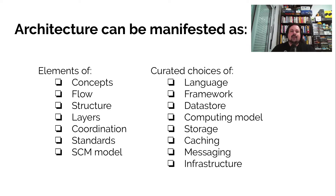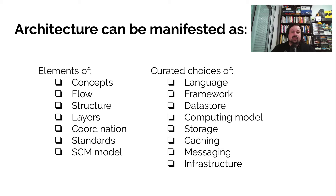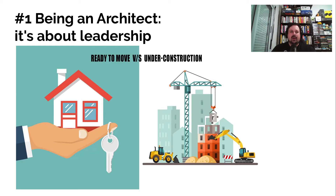Architecture manifests in several elements: the concepts in your system, the flows — business flows and technical flows — the structure you express in your code, the layers in different solutions, the coordination between what's local and what's global, the standards you follow, and the SCM model you use. Architecture also manifests in a curated list of choices: which language for this problem or team, which framework, which library, which data store, which computing model — EC2, ECS, EKS, serverless, edge, IoT — which storage, which caching, which messaging, which infrastructure.